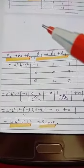Apply R2 → R2 + R1 and R3 → R3 + R1. The easy method to solve a 3×3 determinant is to create a row or column with 1, 1, 1 and then create zeros, and expand along that row or column. After R2 + R1: row 2 becomes (0, 0, 2). After R3 + R1: row 3 becomes (0, 2, 0).